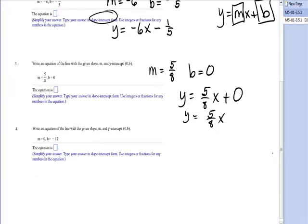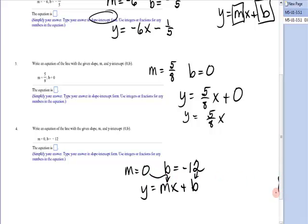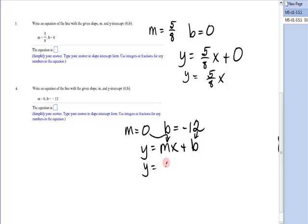The last one, you're given that the slope is 0 and the y-intercept is negative 12. If you plug those in, y equals mx plus b, you will have y is equal to 0 times x minus 12. So even though the form says plus b, if b is a negative number, you write it as minus. Well, 0 times x is 0, so y is equal to negative 12.